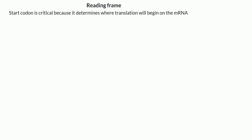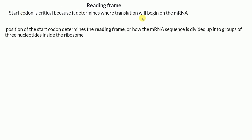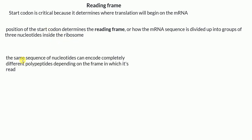Now I want to talk about reading frames. The start codon is critical because it determines where translation will begin on the mRNA. The position of the start codon also determines the reading frame — that is, how the mRNA sequence is divided up into groups of three nucleotides inside the ribosome. The same nucleotide sequence can encode completely different polypeptides depending on the frame in which it is read.